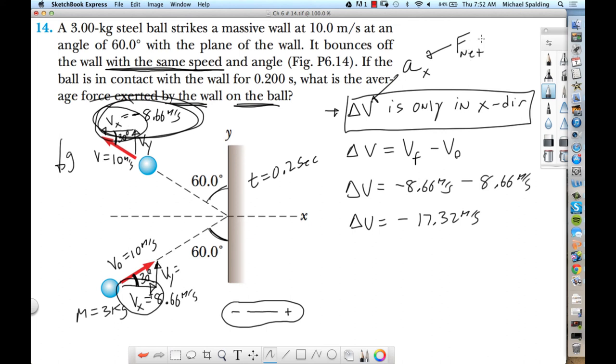So what they're asking for is the force exerted by the wall on the ball. So doing this chapter six style, you go like this. F net is equal to change of momentum over time. But what is change of momentum? M delta v, right? Momentum is mass times velocity. So change of momentum is mass times change of velocity over time.